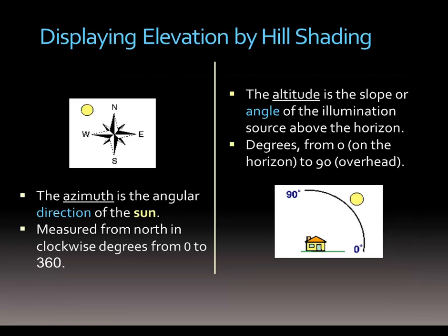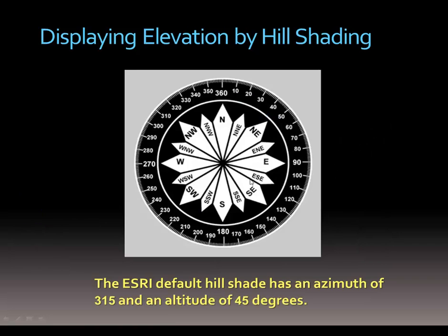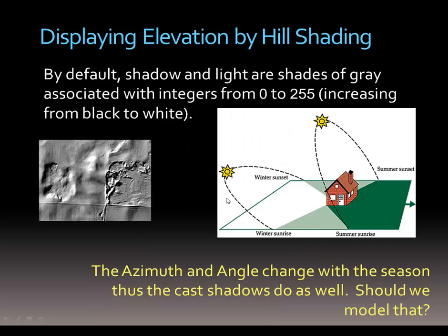For hill shading, the first thing to establish is where the sun is — the direction of illumination, whether it's in the northwest, northeast, or southwest. Then we establish the altitude. If the sun is lower there will be more shadows; if the sun is directly overhead there will be less. These are all established as azimuths. By moving the sun to different locations and altitudes, we can control the amount of shadows being displayed in our hill shading.